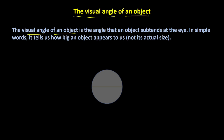let's first understand the visual angle of an object. The visual angle of an object is the angle that an object subtends at the eye. In simple words, it tells how big an object appears to us. For an example, this is the human eye and this is an object in front of the human eye. So, the visual angle is this particular angle that we are talking about.